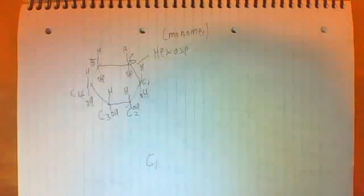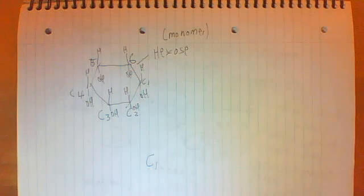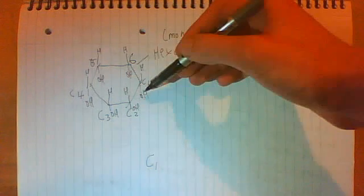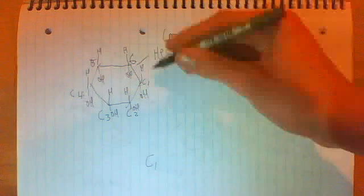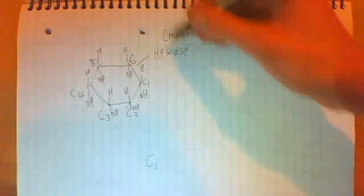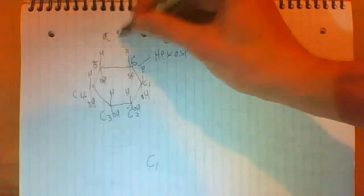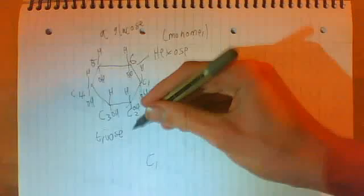Now the anomeric carbon is special — it's also the first carbon. The reason why it's special is because if that OH was above the midline and the hydrogen above the midline swapped places with this hydroxyl group, you'd be left with something called beta-glucose. This is an example of a hexose sugar known as alpha-glucose. You can also get triose sugars. An example of that would be triose phosphate (TP), which is used in the light-independent stage of photosynthesis.